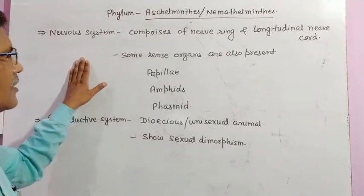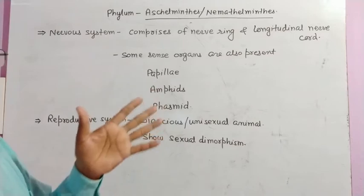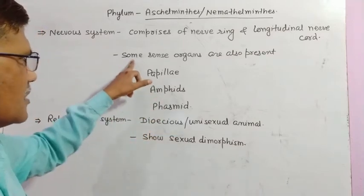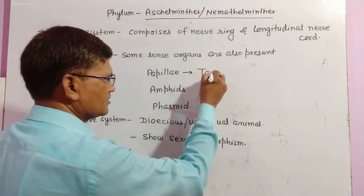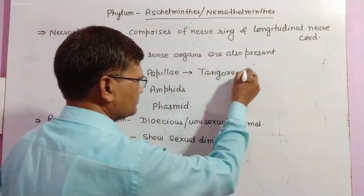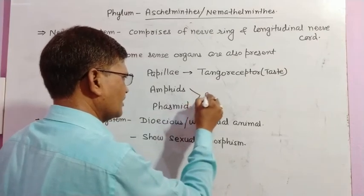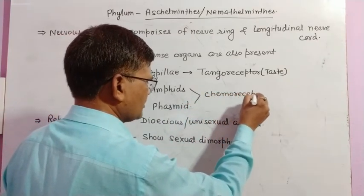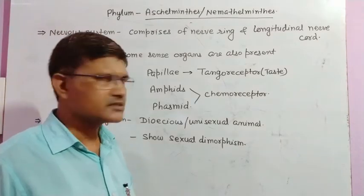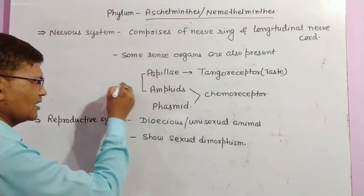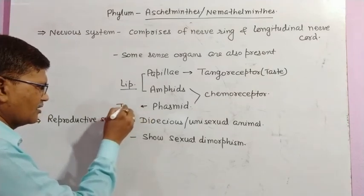The nervous system comprises a nerve ring and two longitudinal nerve cords. Some sense organs are also present: papillae, which are tangoreceptors that receive the sensation of touch and taste, and amphids, which are chemoreceptors that receive the sensation of chemicals. Papillae and amphids are present in the lip region (anterior part), while phasmids are present in the tail region.